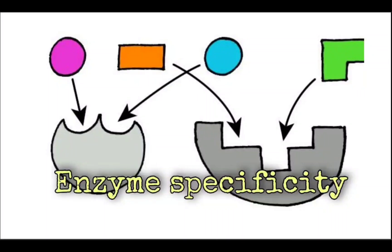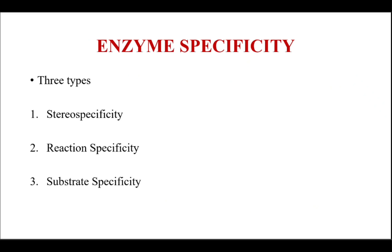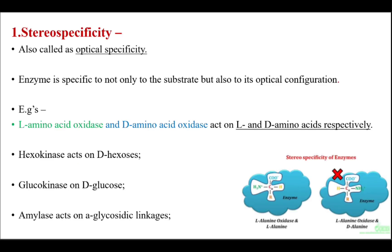Hello everyone. Today the topic is about enzyme specificity. There are three types of enzyme specificities: stereospecificity, reaction specificity, and substrate specificity.